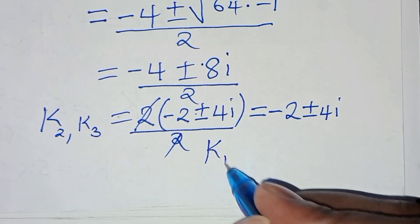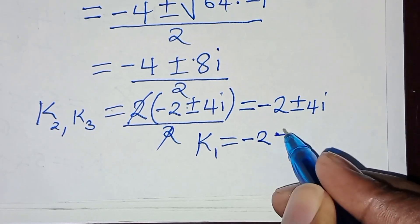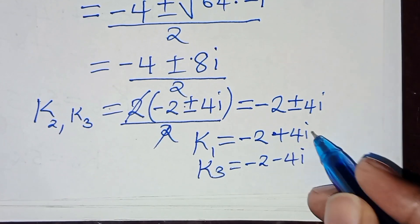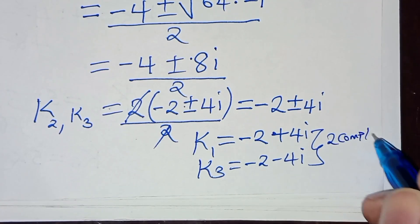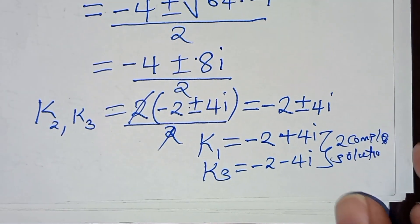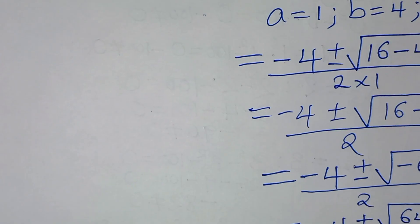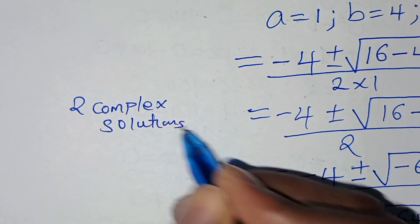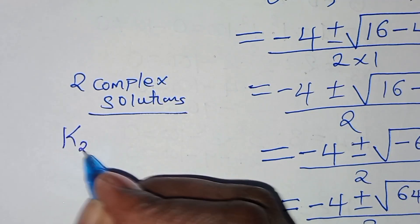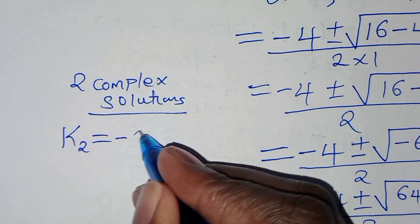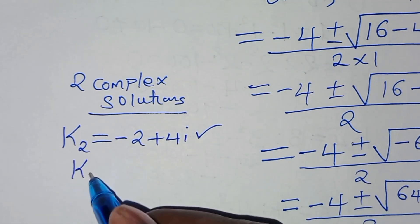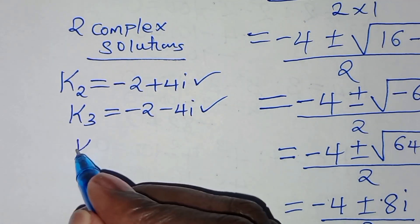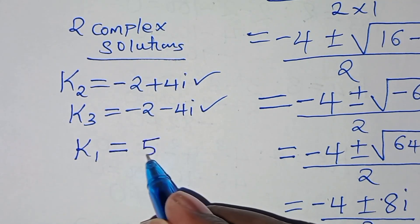So k₂ equals negative 2 plus 4i and k₃ equals negative 2 minus 4i. These are the two complex solutions to this algebra problem. We have only one real solution, k₁ equal to 5.